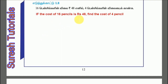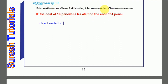If the cost of 16 pencils is 48 rupees, find the cost of 4 pencils. So if you want this, it is a direct variation — if you want more pencils, the cost will increase. If the amount increases, the cost will increase. So this is a direct variation. 16 pencils are 48 rupees. Now we will find the cost of 1 pencil.